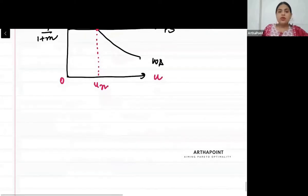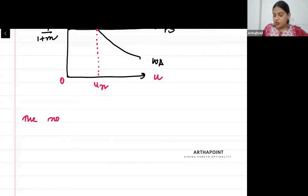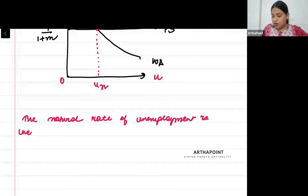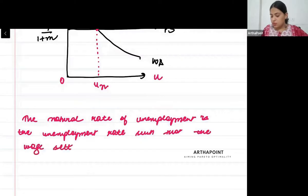Please write this down: the natural rate of unemployment is the unemployment rate such that the wage setting relation equals the price setting relation.